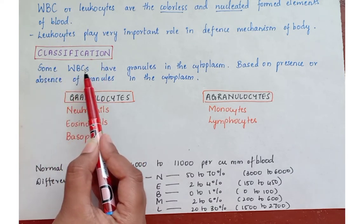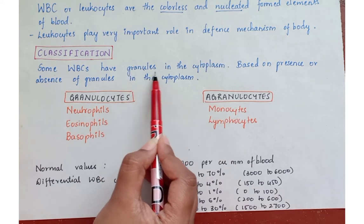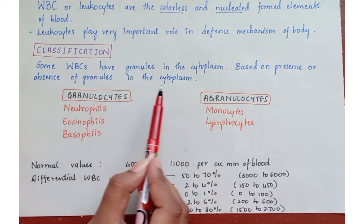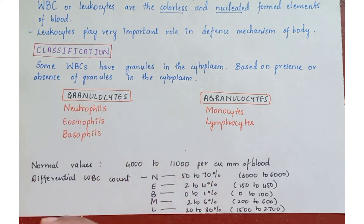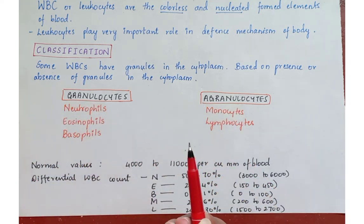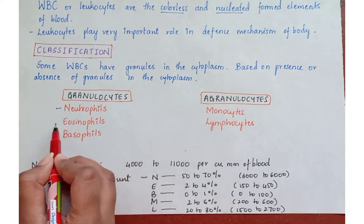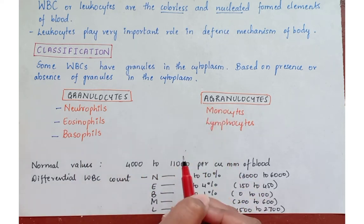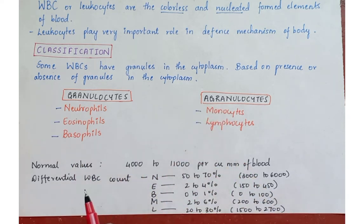Classification: Some WBCs have granules in the cytoplasm. Based on the presence or absence of granules in the cytoplasm, these are classified into two types: Granulocytes and Agranulocytes. Granulocytes are neutrophils, eosinophils, and basophils, whereas agranulocytes are monocytes and lymphocytes.